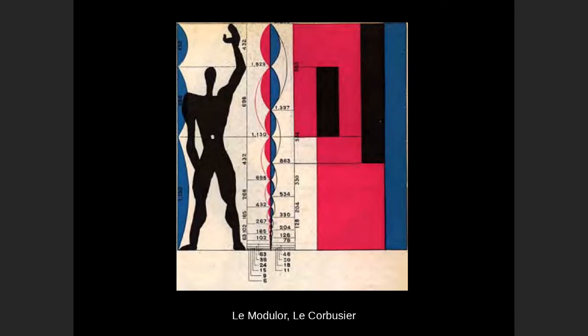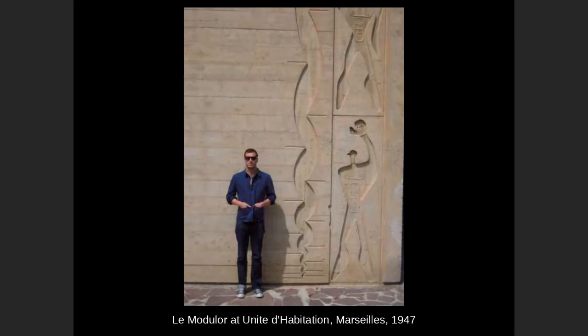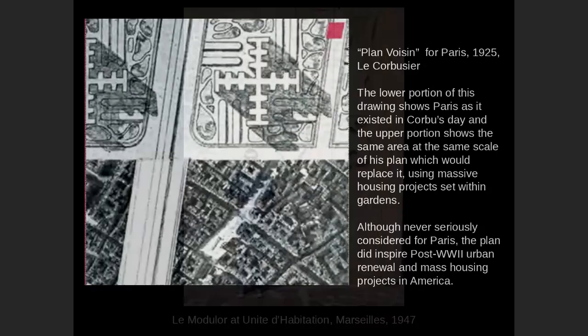This is his Modulor man — you can compare it to Leonardo da Vinci's Renaissance man. He thought he could design buildings based on these proportions. One of the reasons I'm not fond of Corbusier is because these proportions are not realistic and his spaces are not comfortable to be in, in my personal opinion. Here's someone standing next to the impressed form, and you can see his figures aren't exactly realistic.